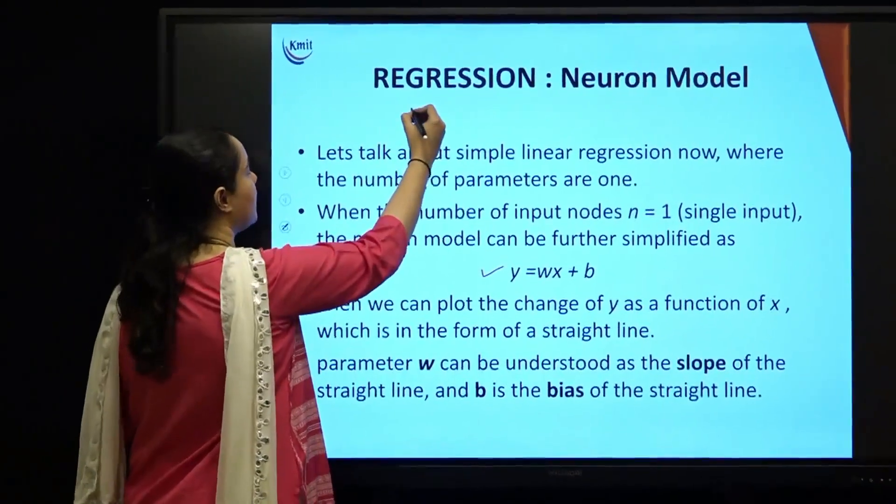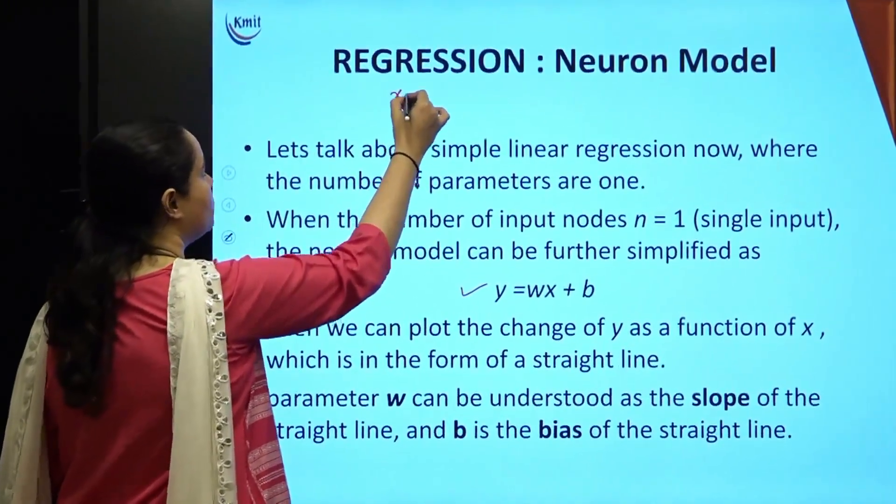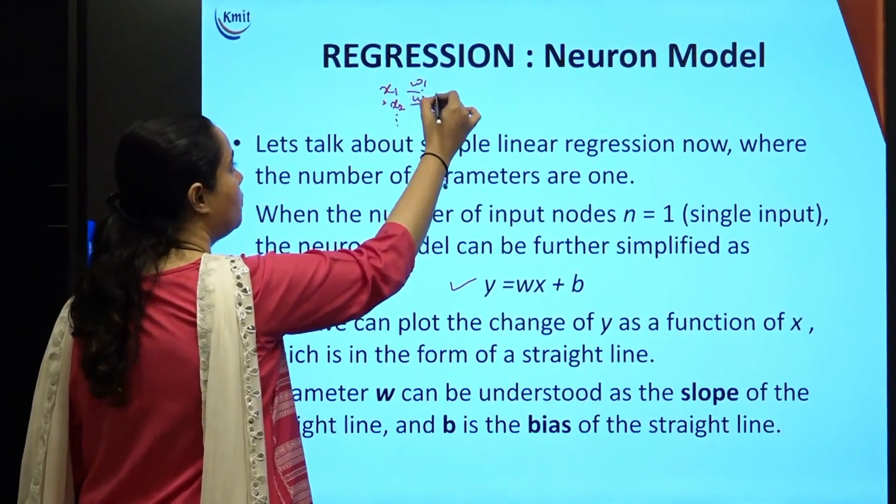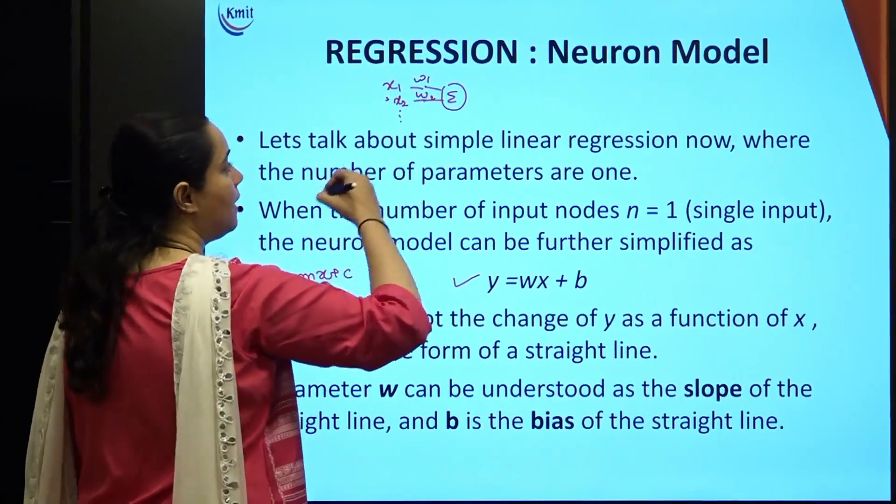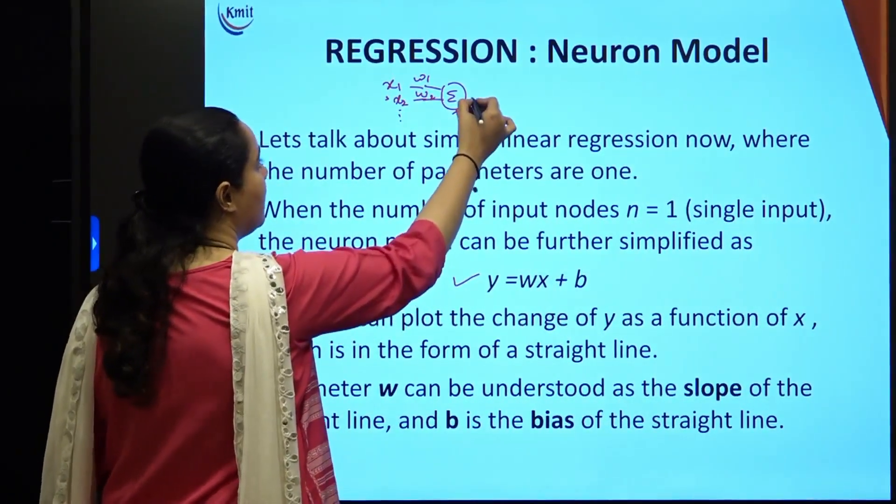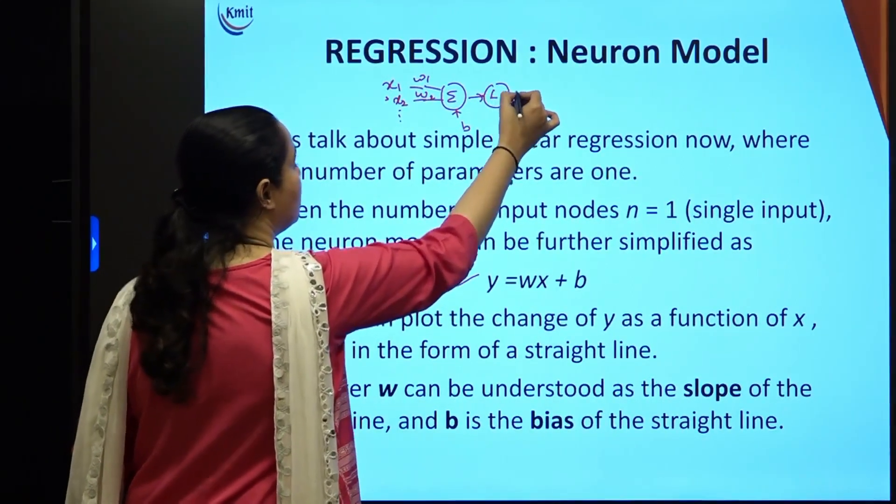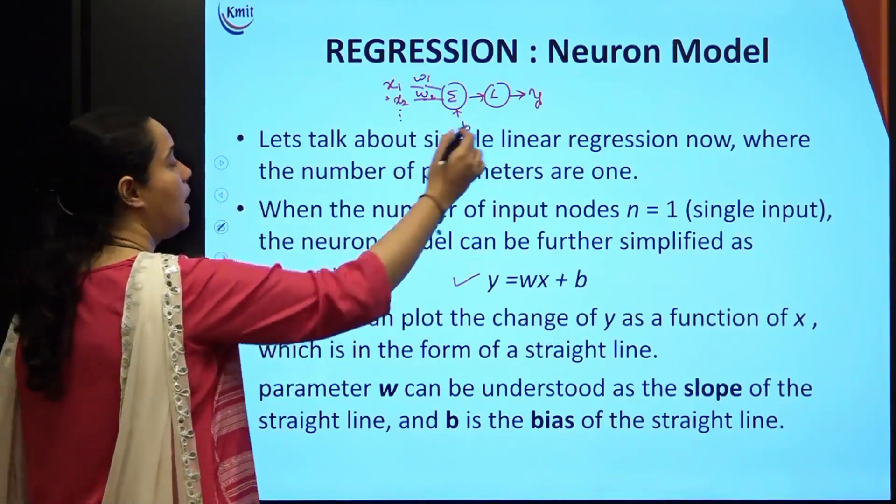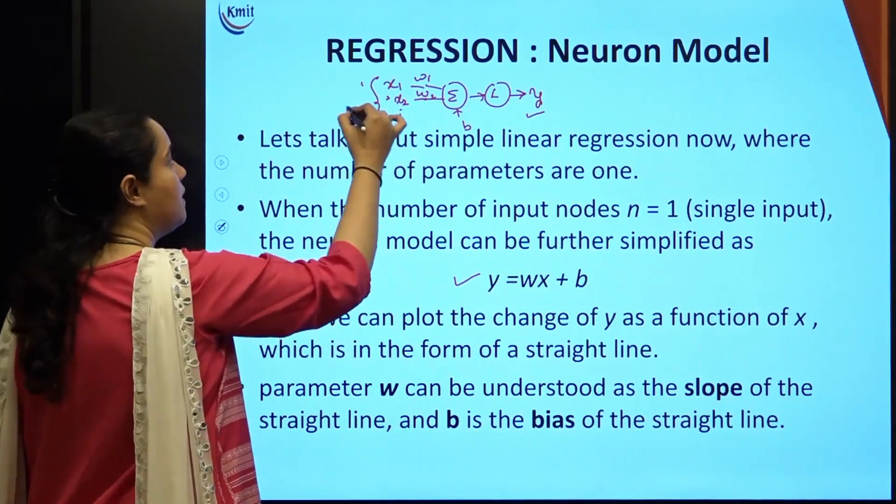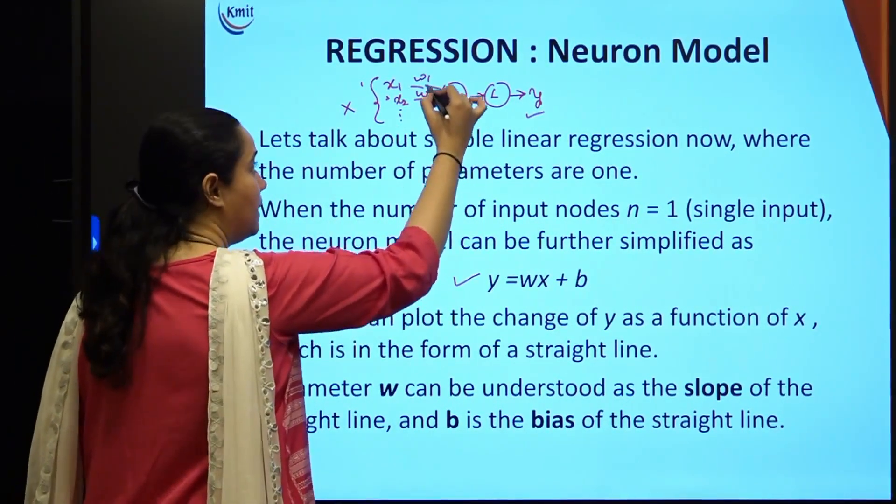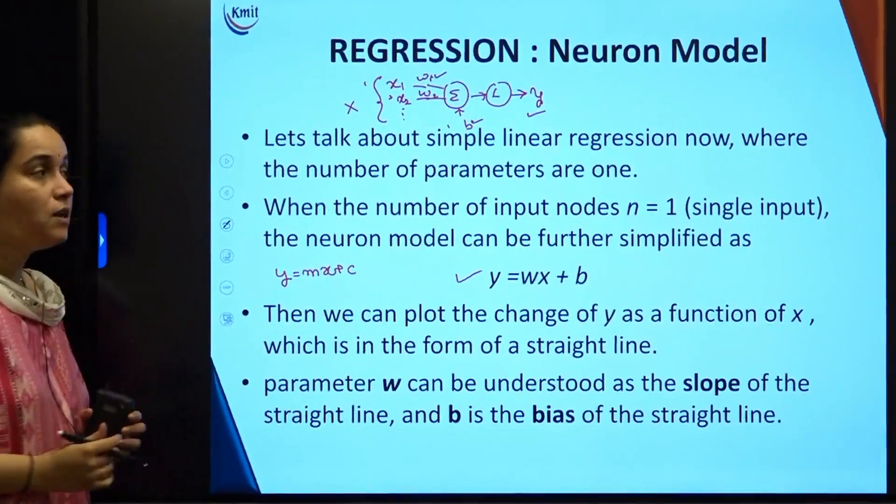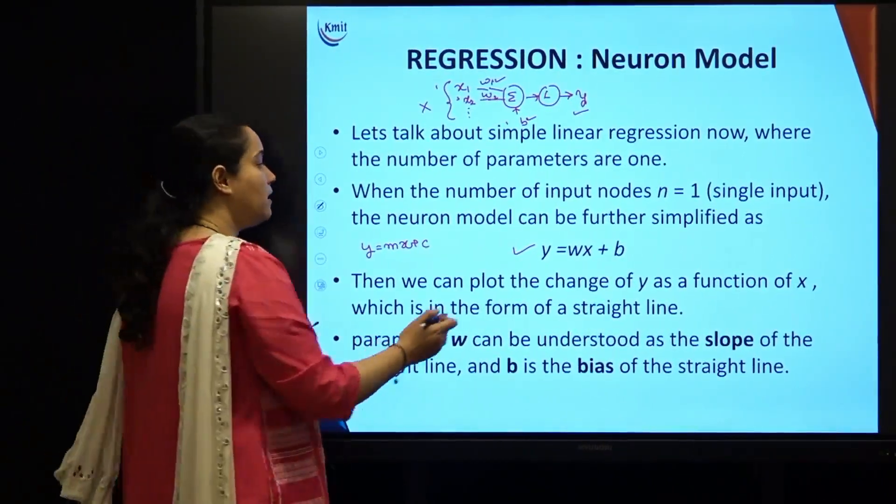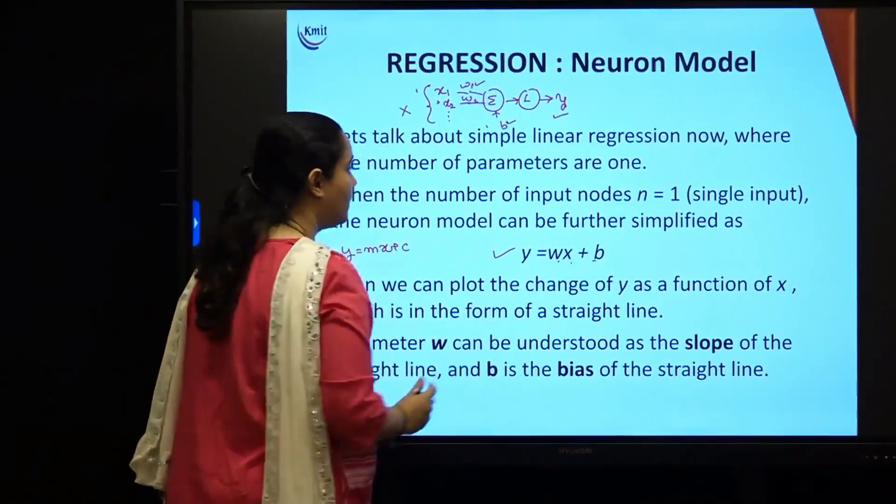You remember from our last session, you have x1, x2, and so on. All of these have associated weights w1, w2. All these go to a summator, and then you also have a bias. Then you have some logic function which is going to give you an output y. If you want to write down a simple model equation for it, it is y equals wx plus b.